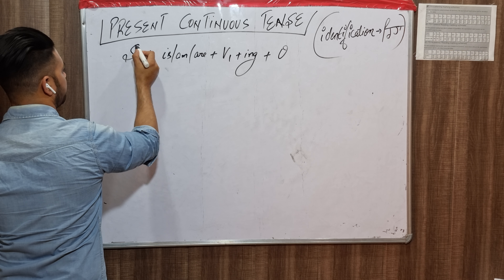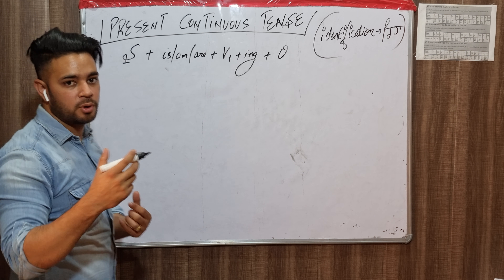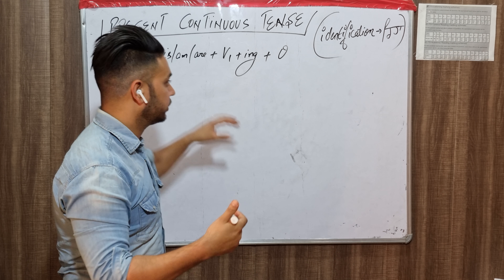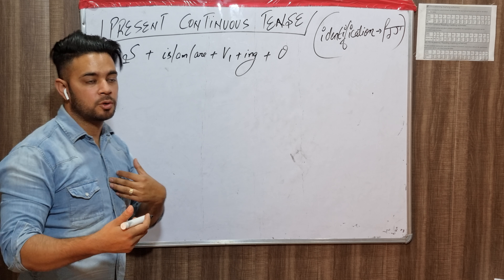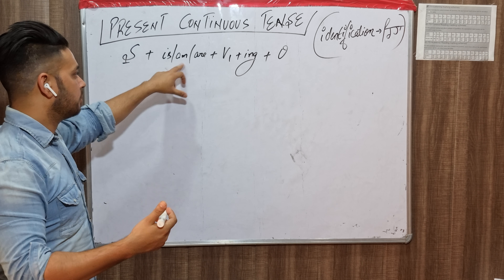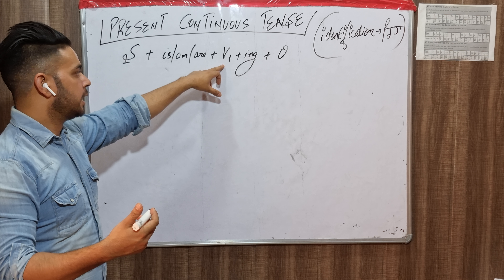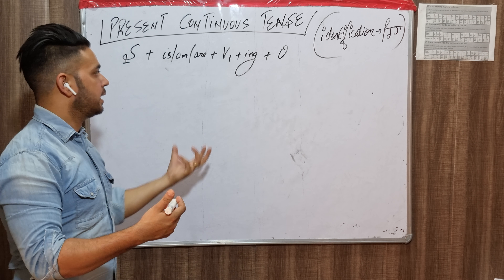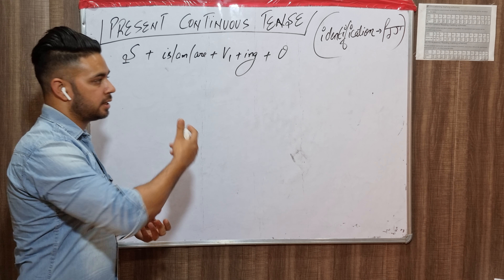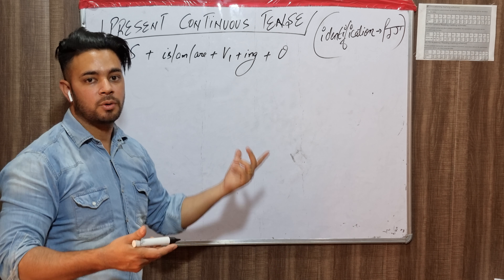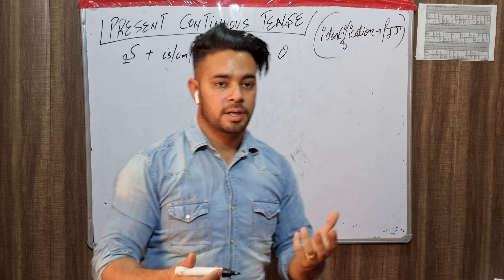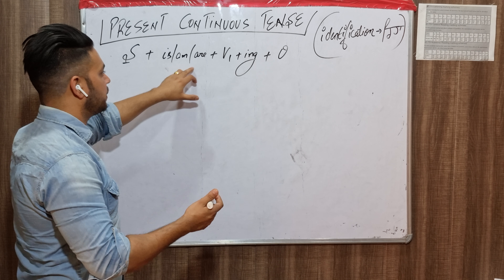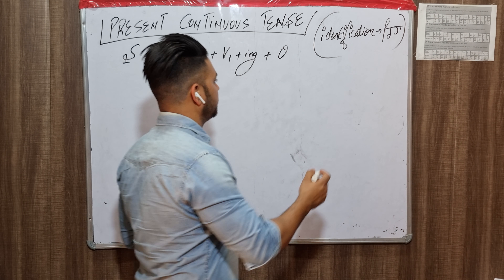For example: 'I am writing on the whiteboard.' Here, the subject is 'I,' and I am writing on the whiteboard. So first of all we have to write is/am/are, and then what we have to write next.